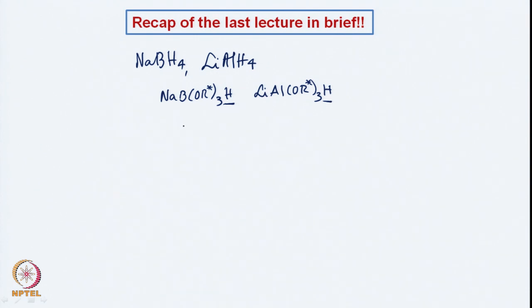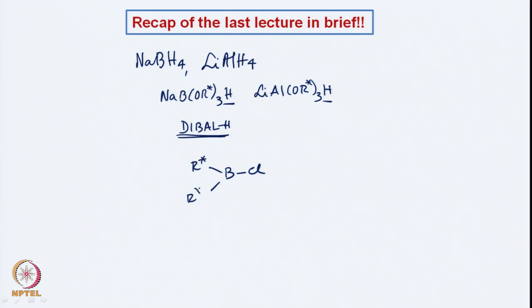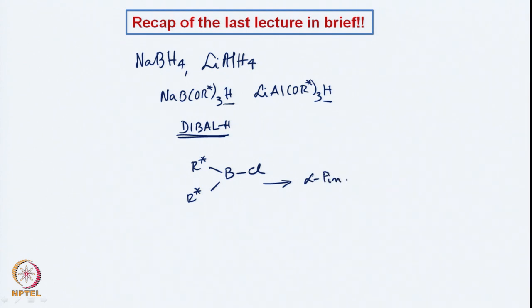Likewise, this electrophilic diborane we can also modify, and we can make use of the reducing agent for chiral reductions provided that the diborane part is chiral. We also saw another reducing agent derived from alpha-pinene, which had a boron and chlorine and an R* part, which led eventually to the reduction of the ketone, with alpha-pinene coming out from the reaction.